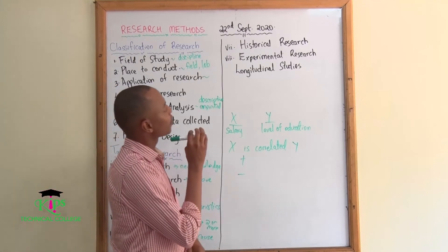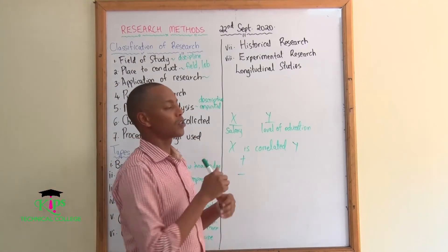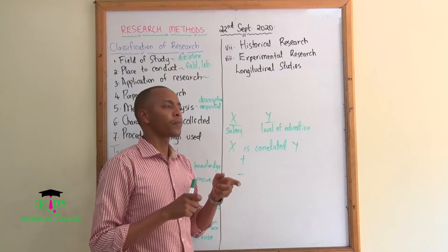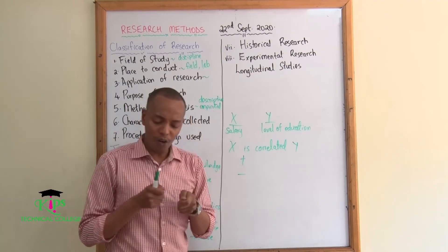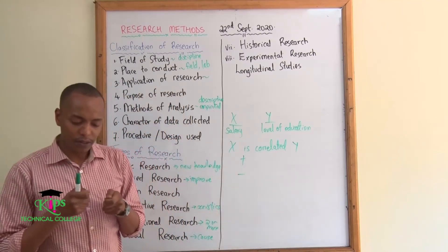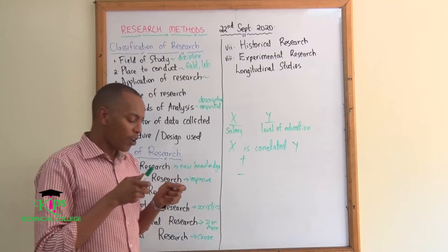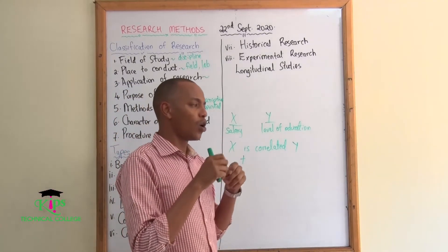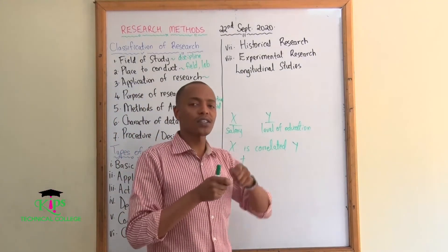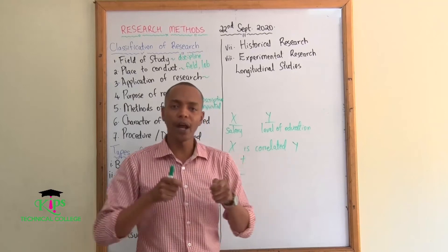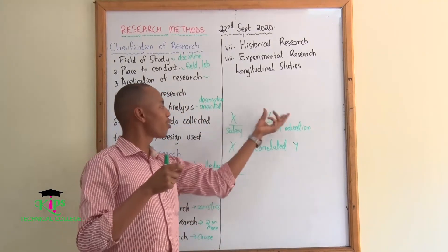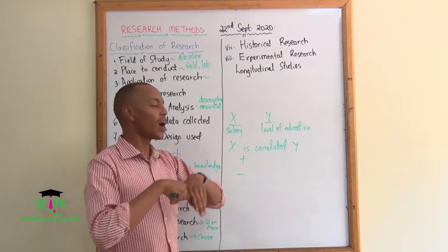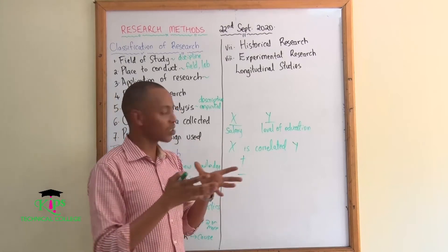Another type is experimental research. Experimental research usually goes into detail on what causes a certain phenomenon, where you manipulate both of the variables that you are trying to study in order to come up with an actual outcome.